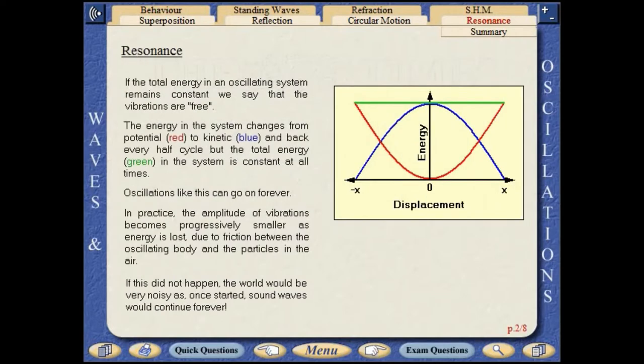If the total energy in an oscillating system remains constant we say that the vibrations are free. The energy in the system changes from potential to kinetic and back every half cycle but the total energy in the system is constant at all times. Oscillations like this can go on forever.